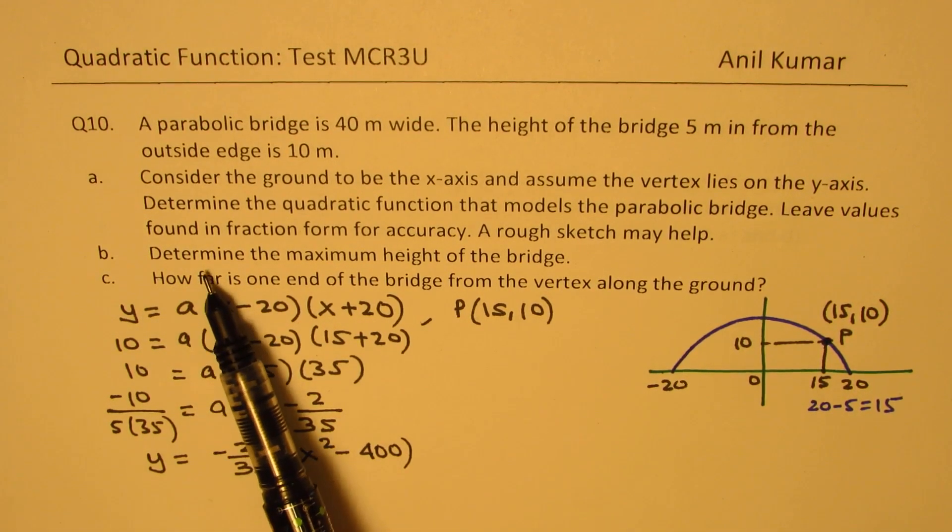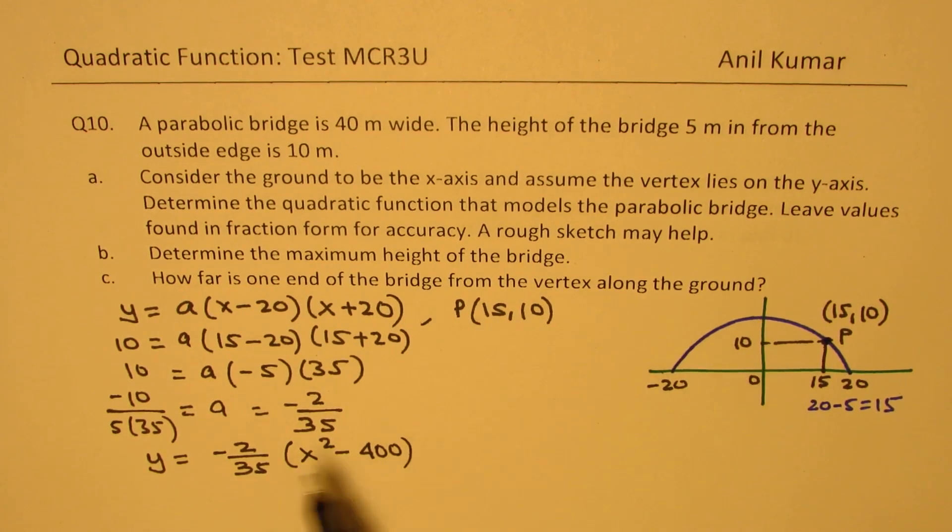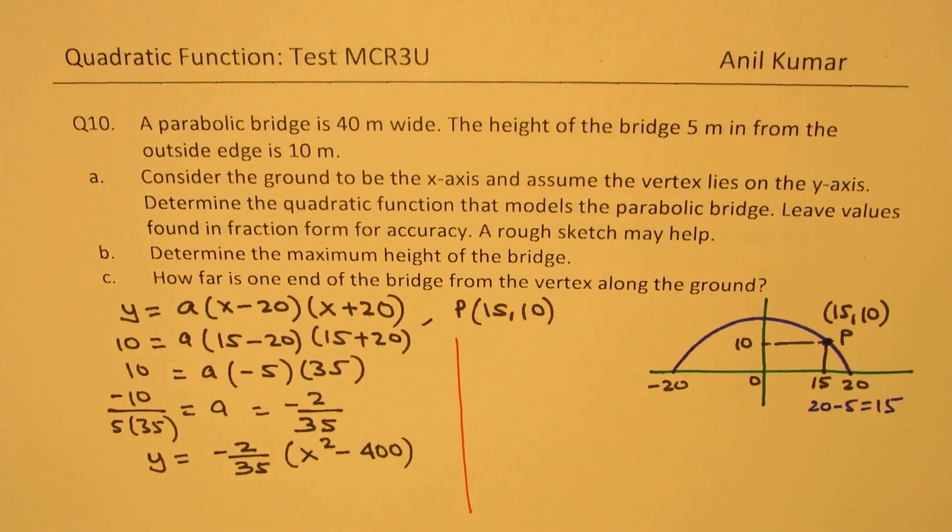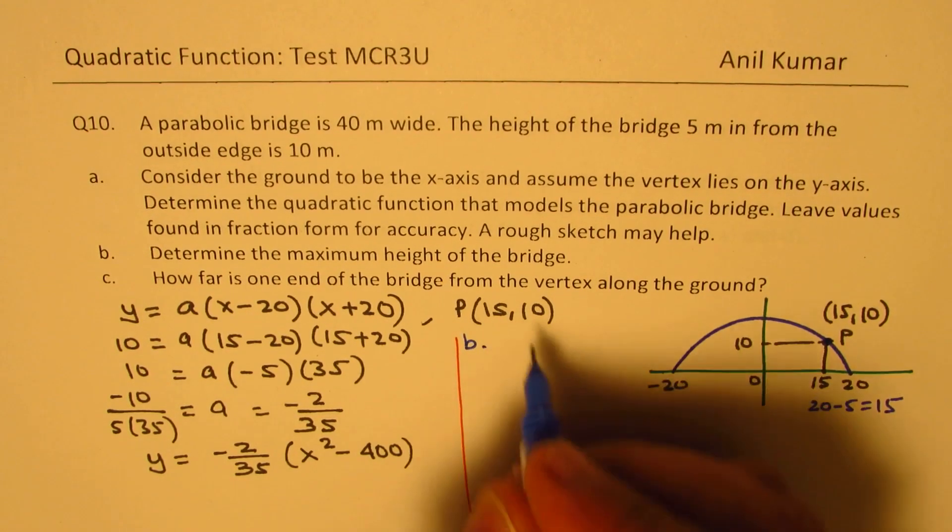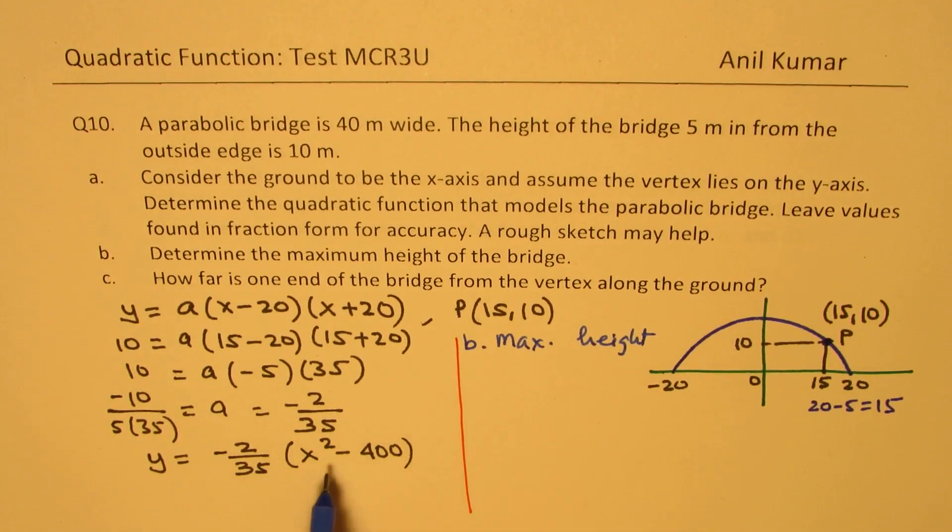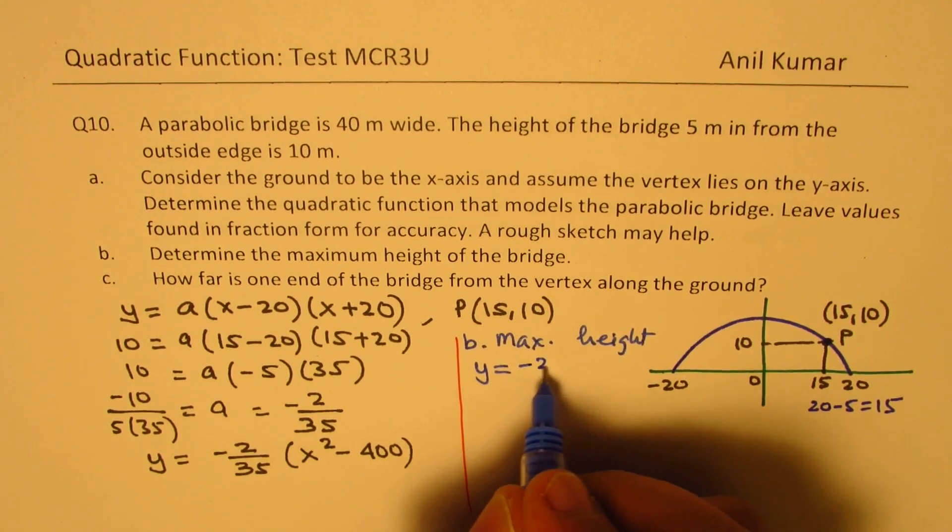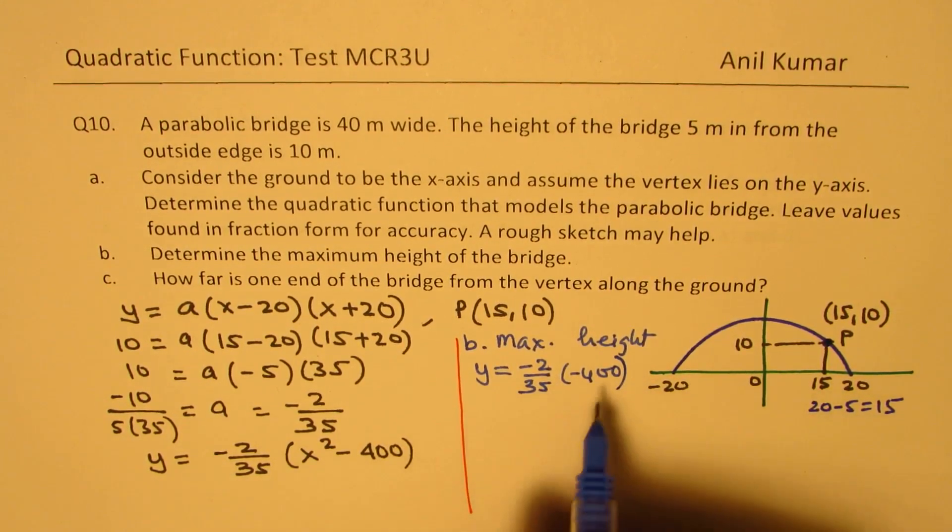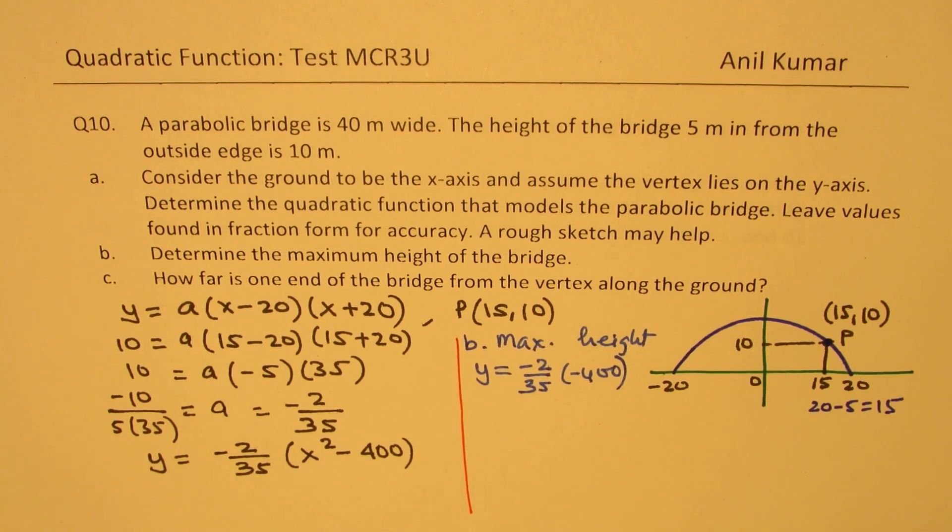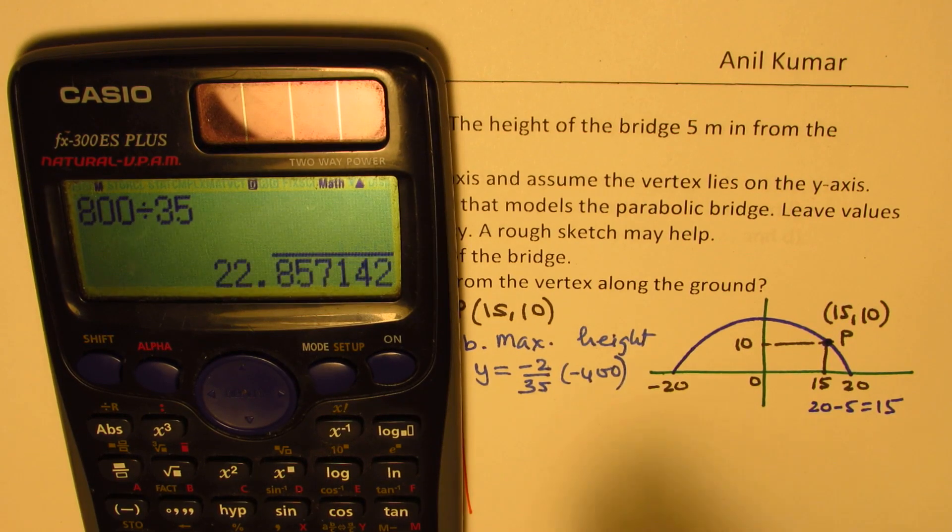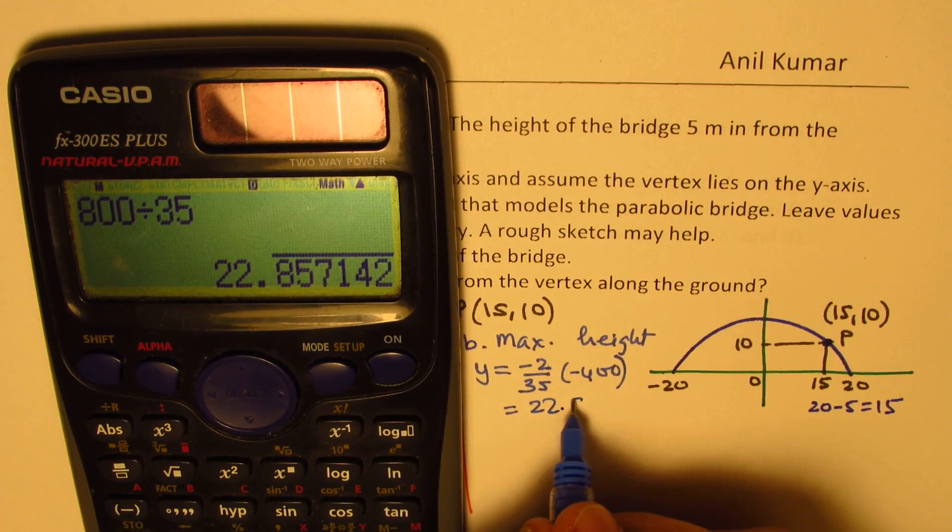Part b is determine maximum height of the bridge. So the maximum height is at x equals to 0. So let's find part b now. So maximum height will be when x equals to 0. So it is y equals to minus 2 over 35 times minus 400. Right? So we can do 800 by 35. Let's use calculator now.